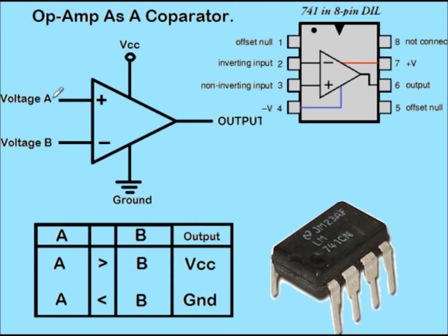Even if voltage A is 0.001 volts and B is 0.002 volts, the output will go to ground. Comparators are very sensitive and can compare very low voltages. This is how a comparator works.